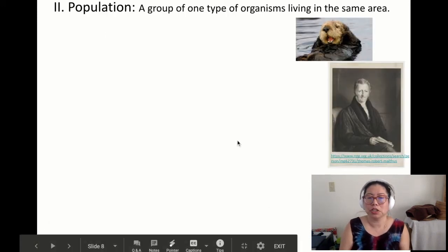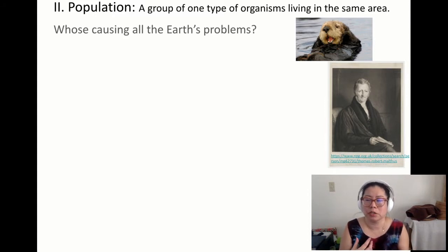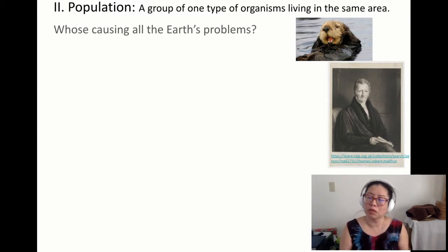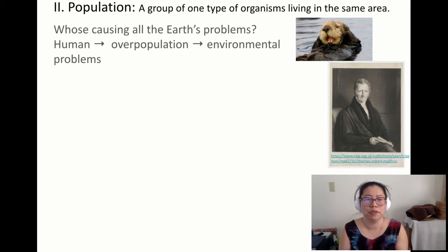A population is a group of one type of organism living in the same area. Here we have a sea otter grooming itself — if it's not grooming, they are spending 12 hours a day eating. Who's causing all of Earth's problems? All we have to do is look at ourselves. We are nearing overpopulation, and as we are living, we're also causing huge environmental problems.